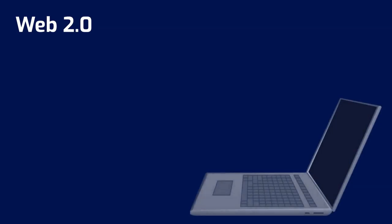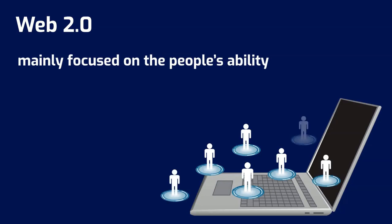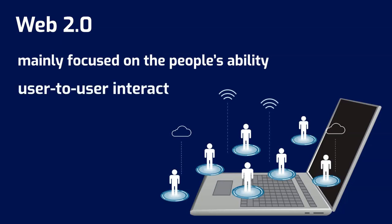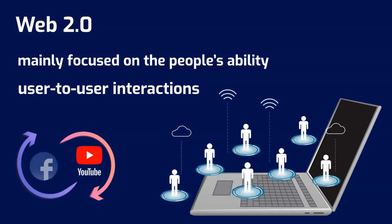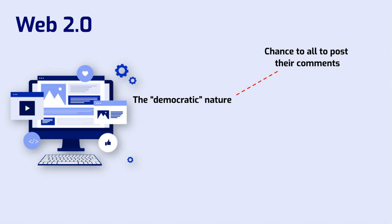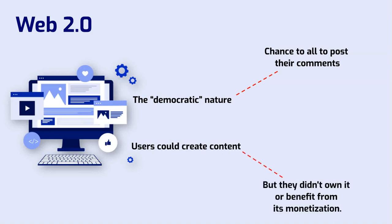Web 2.0, described as a second generation of the World Wide Web, mainly focused on people's ability to collaborate and share information online. Instead of companies providing content for users, they also began to provide platforms to share user-generated content and engage in user-to-user interactions, like YouTube and Facebook. The democratic nature of Web 2.0 gave equal chance to all to post their comments. However, too much information posted by many people confused readers. Although in Web 2.0 users could create content, they didn't own it or benefit from its monetization.